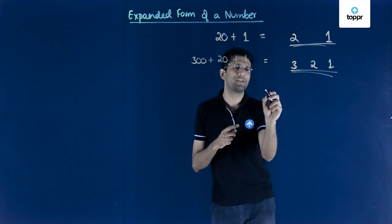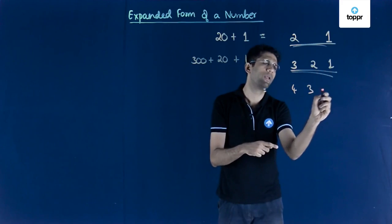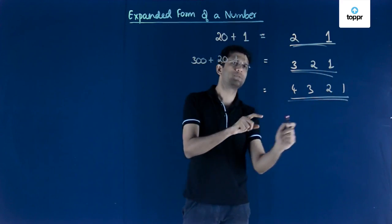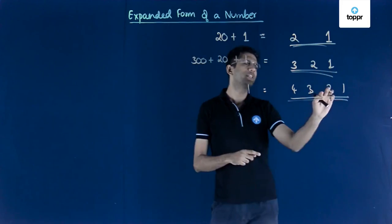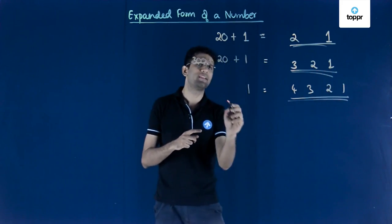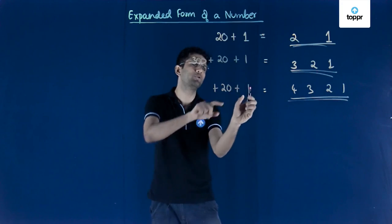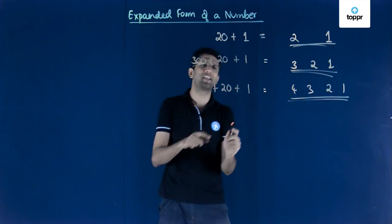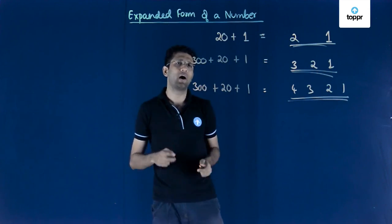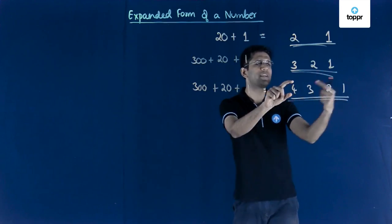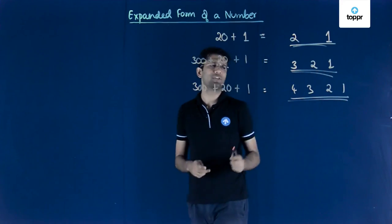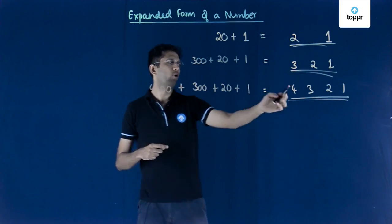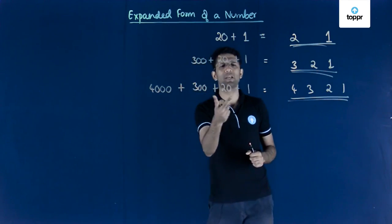Let us now add one more digit. If we have the number 4321, then to write 4321 in expanded form: 1 is at the units place so we write 1 multiplied by 1, giving 1. Next, 2 is at the tens place, so 2 into 10 gives 20. Then 3 is at the hundreds place, so 3 into 100 gives 300. Finally, 4 is at the thousands place, so 4 into 1000 gives 4000. So 4321 equals 4000 plus 300 plus 20 plus 1.